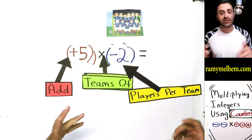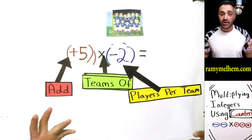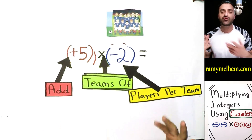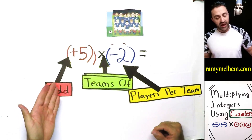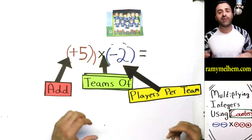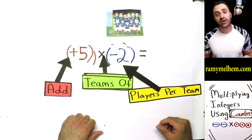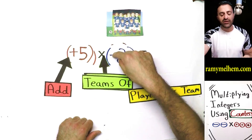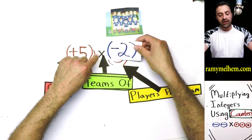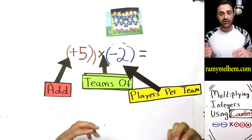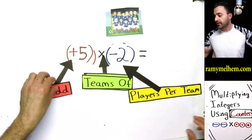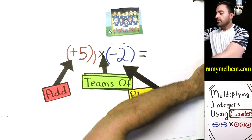When would we ever need to add teams in real life? Well, if you want to start a tournament, you say we need to add five teams to our tournament roster — five teams with two players in each. The negative here just tells us the kind of team: either the red team or the blue team, the negatives. If we're feeling good about reading this, let's talk about a few rules.